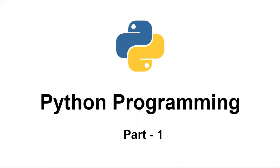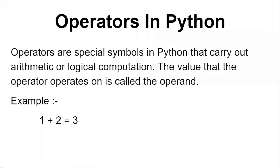Hi everyone, here we are going to study Python. In this video, Python programming part one, we are going to discuss operators in Python. Operators are special symbols in Python that carry out arithmetic or logical computations. The value that the operator operates on is called the operand. For example, 1 + 2 = 3 — here 1 and 2 are operands and plus is the operator.